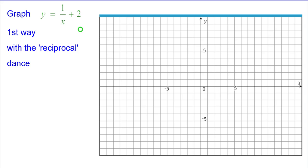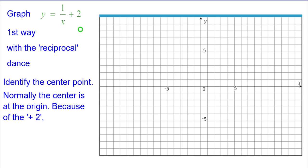The first way is we're going to use what I call the reciprocal dance. We need to identify the center point, which is normally at the origin, but because of the plus 2 in the equation, we need to move that center point up two units at 0, 2.